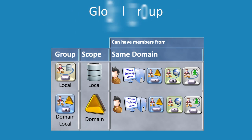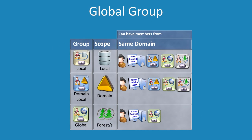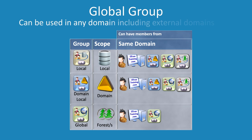The next group is the global group. Out of all the groups, the global group has the smallest amount of membership allowed — only users, computers, and other global groups can be put into a global group. The advantage of a global group is that you can use it in any domain in the forest, unlike domain local groups. If role-based access control is being used, a global group will be created and users requiring access placed in it. This global group will then be placed into a domain local group that is given access to the resource.